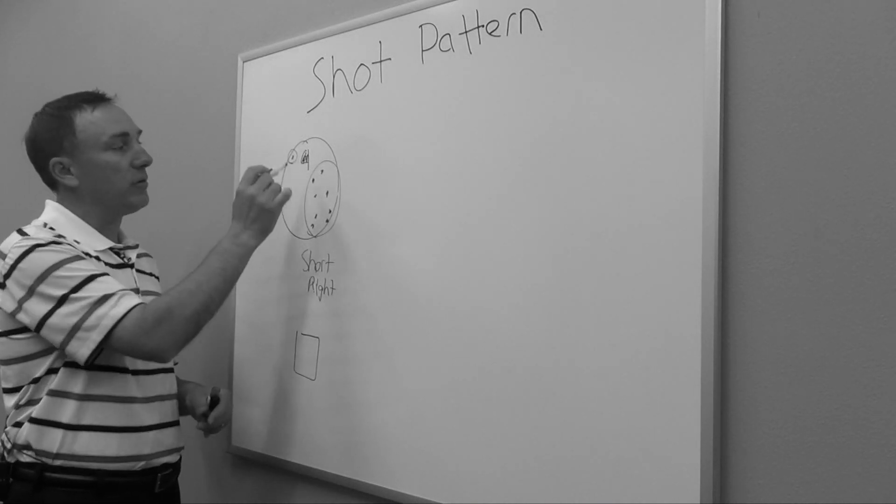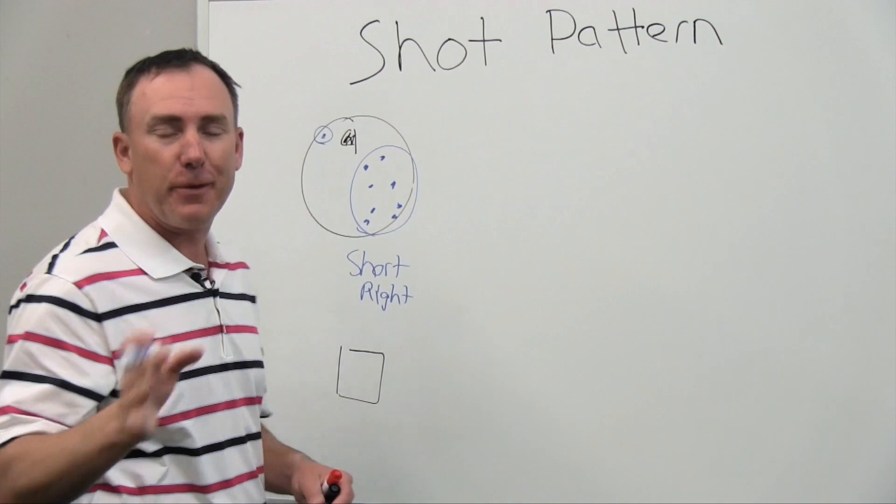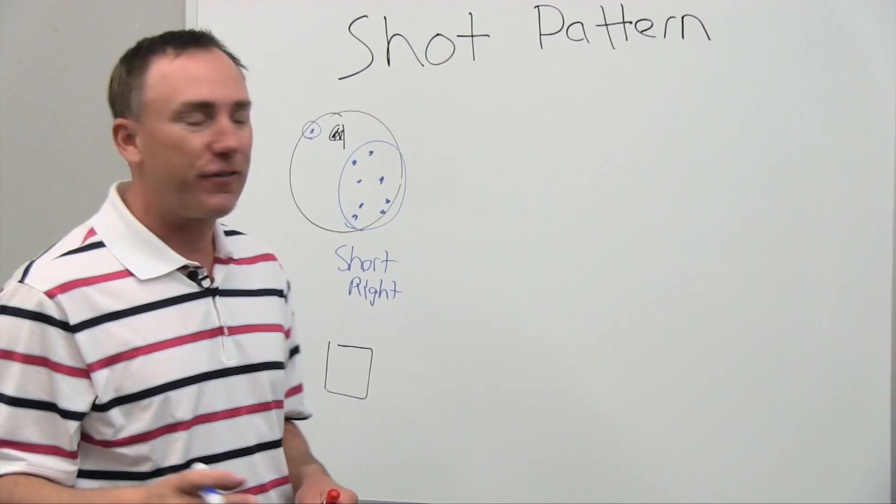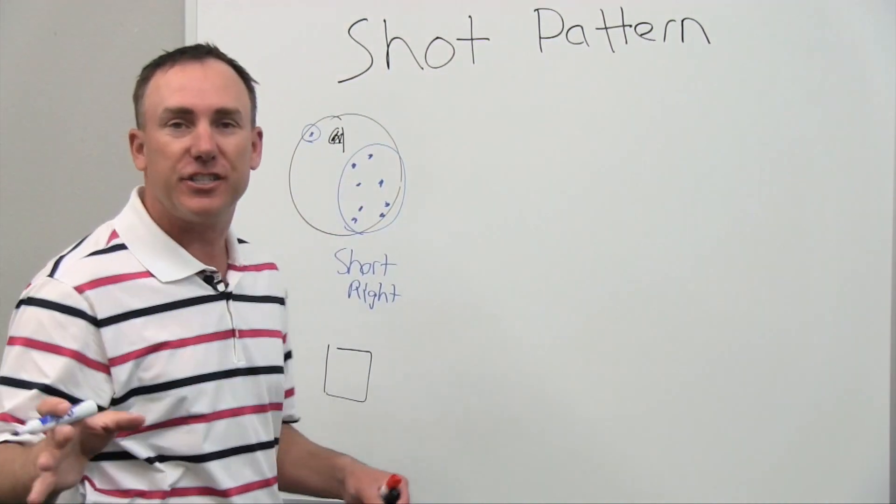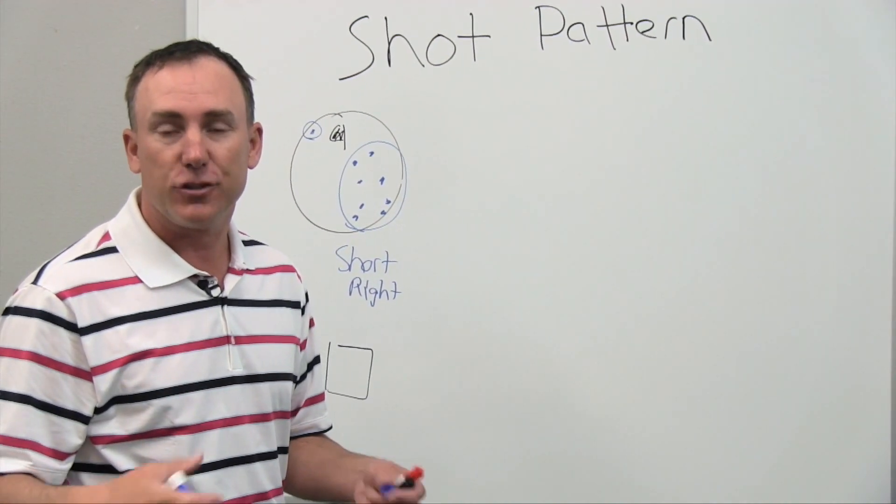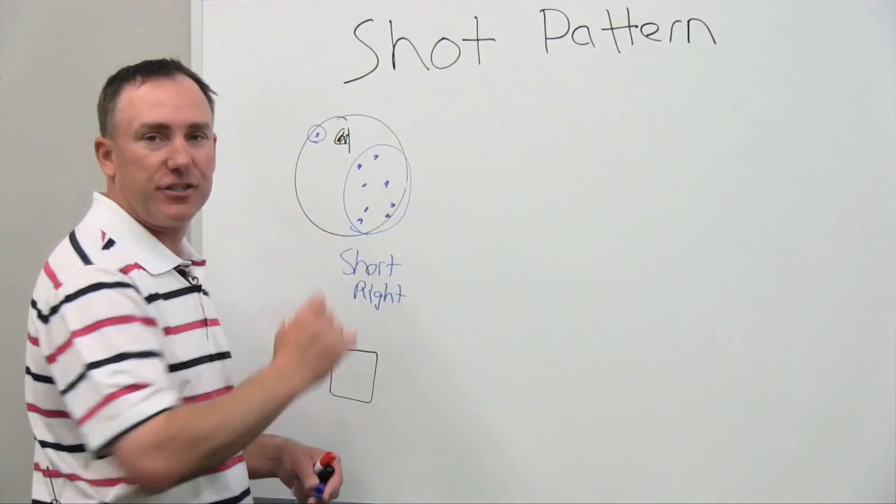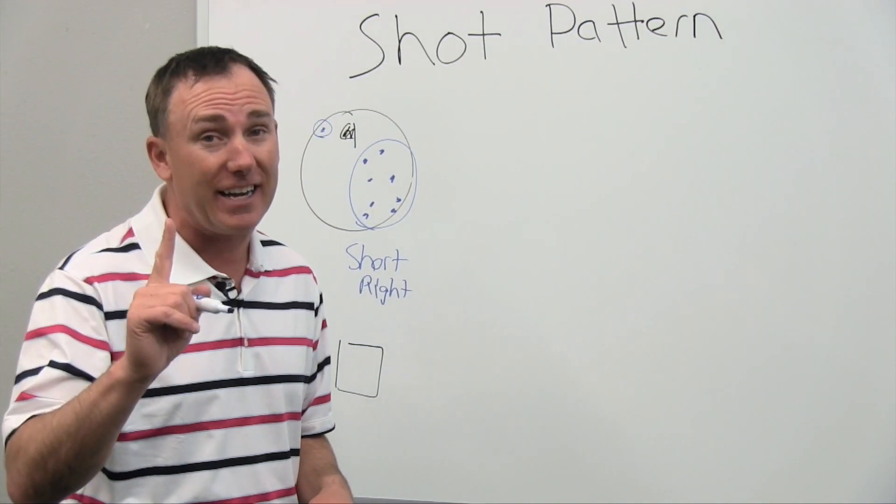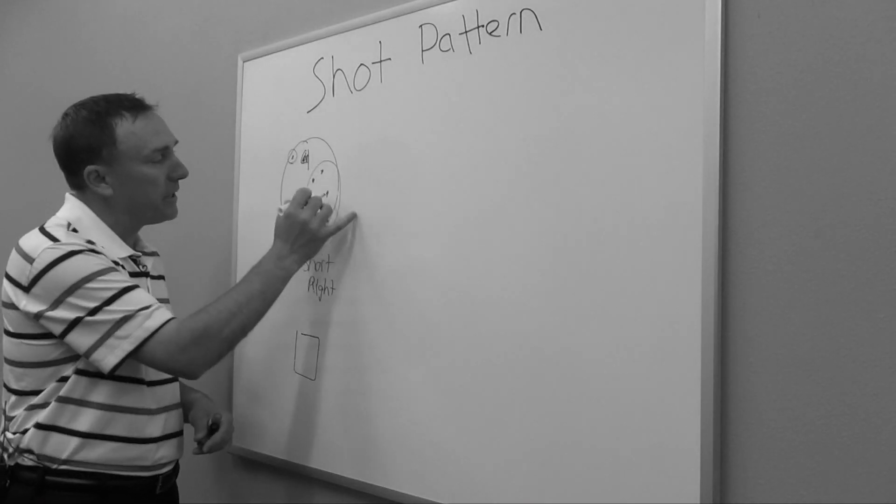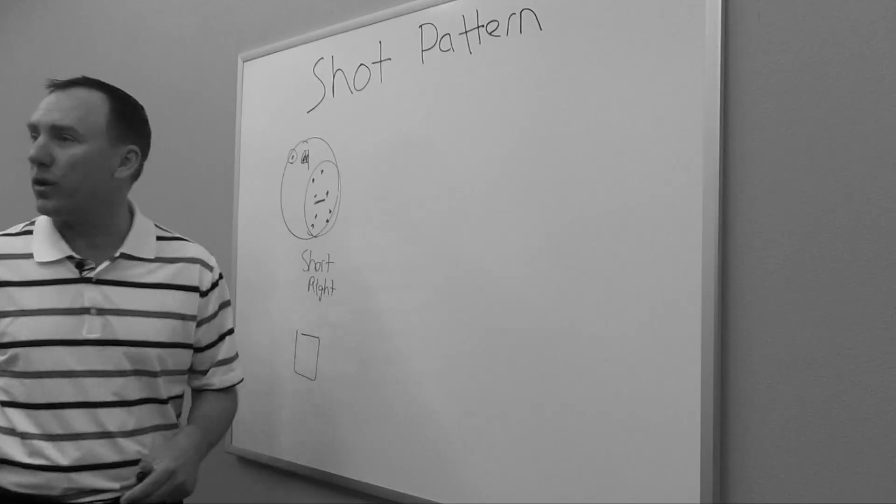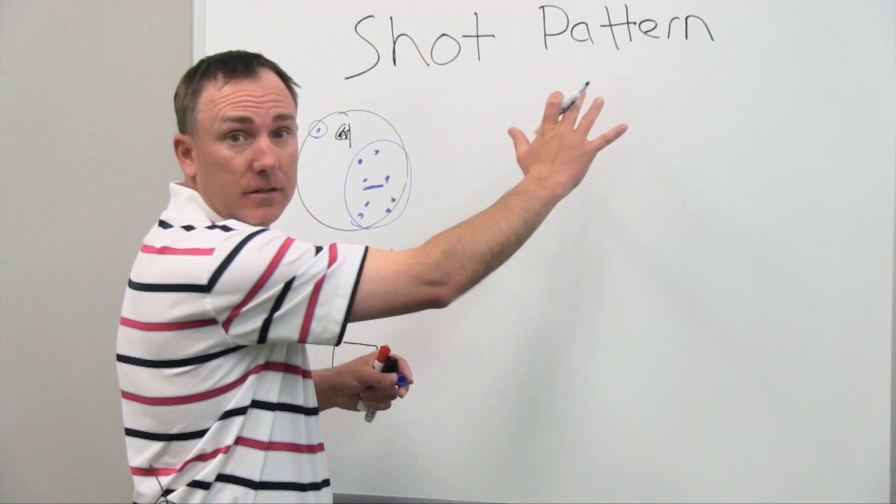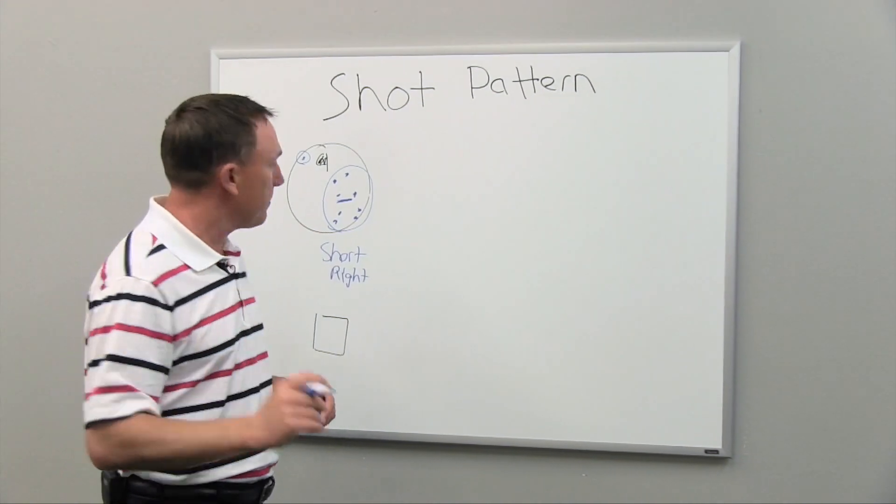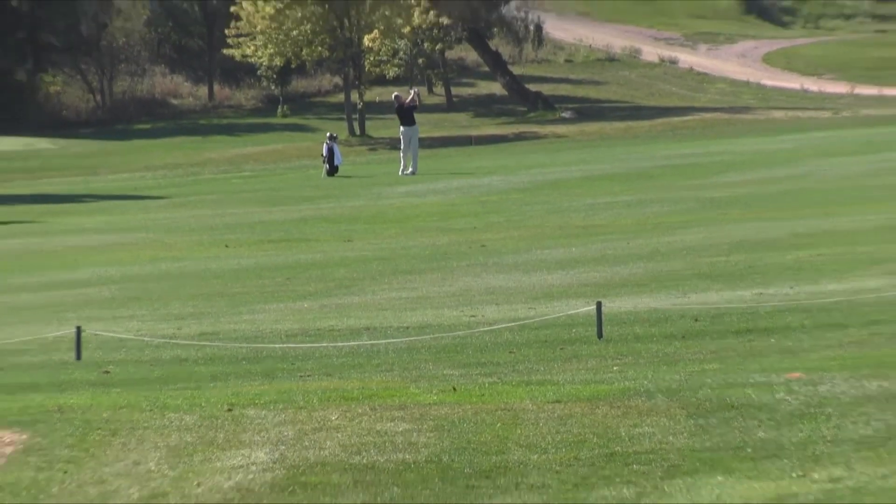Now yes, there's this shot over here that was long and left. Typically most golfers, this is the shot, the seven iron that went 165 yards. So the golfer thinks, oh, I hit my seven iron 165 yards. Well, that was one shot. The pattern or grouping is right in here, probably around 145 yards. When we're looking at a shot pattern, we're not looking at one shot. We're looking at a group of shots.